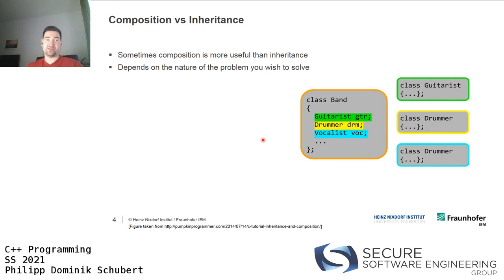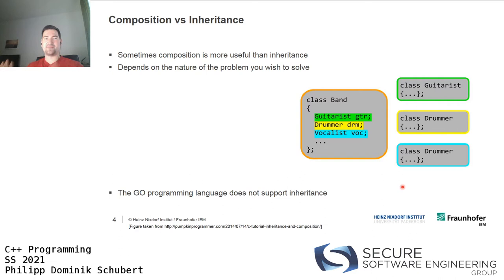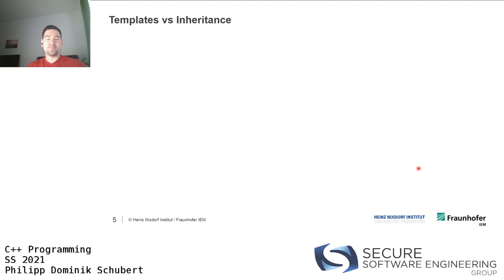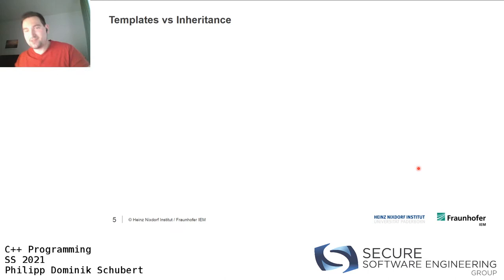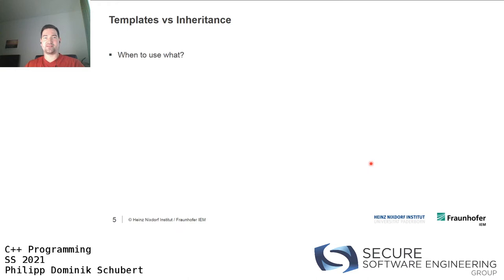Depending on your problem, composition might be better suited. Some languages like Go don't even support inheritance, so in Go you always need to use composition. Composition sometimes has some performance advantages. Now let's also compare templates versus inheritance — templates is another concept of C++, and we already discussed templates and template metaprogramming. So what's the matter with templates versus inheritance — when to use what?